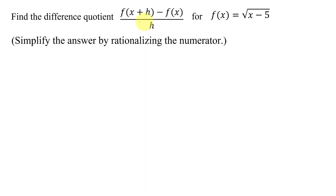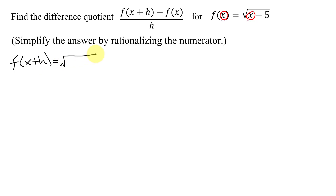The first thing we have to do is figure out what f(x+h) is. The way we do that is we go to f(x) and wherever you see an x, you put x+h. So f(x+h) equals the square root of x+h instead of x, and don't forget I also have a minus 5 underneath that radical.